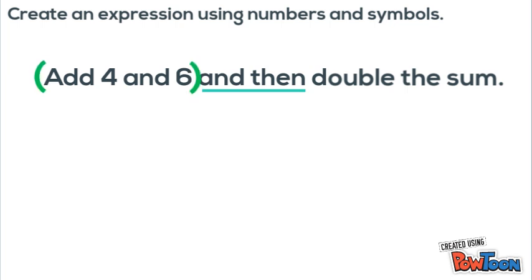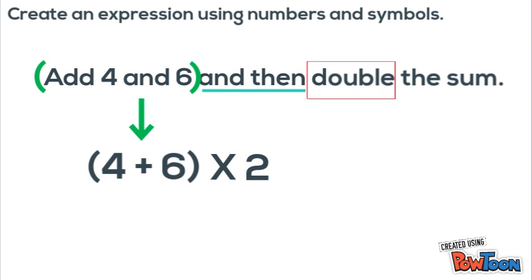It tells us that we need to add four and six first before we double the sum. So since we need to do that first we'll write four plus six in parentheses. Next we look at this keyword in the next part of the phrase which is double. Double tells us to multiply our sum by two. So we write times two after our parentheses.